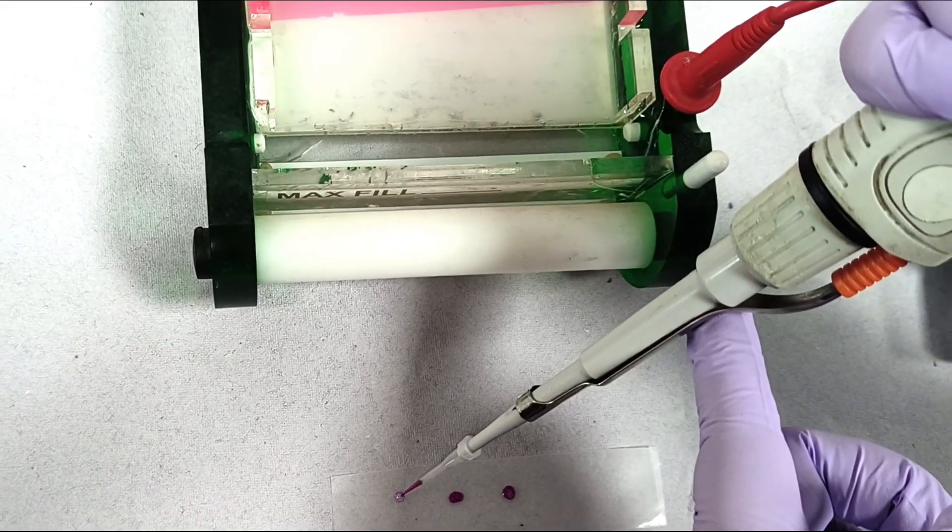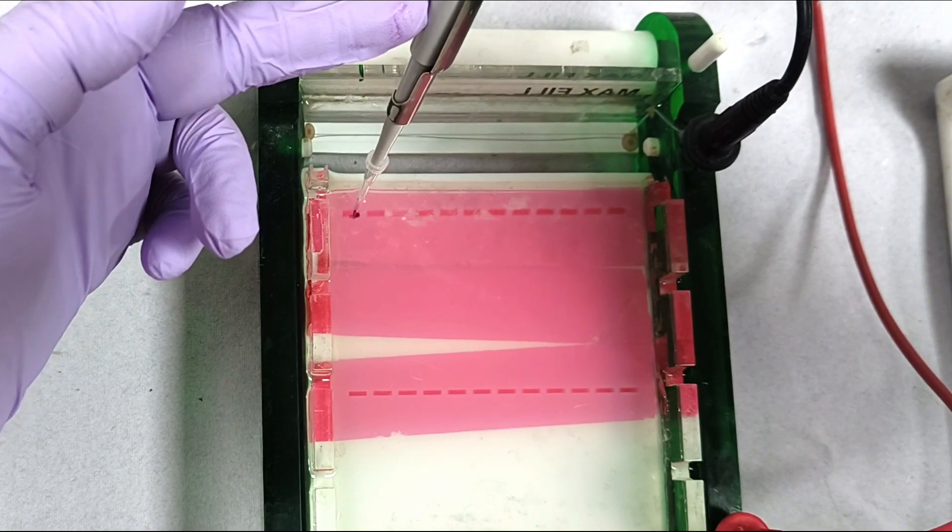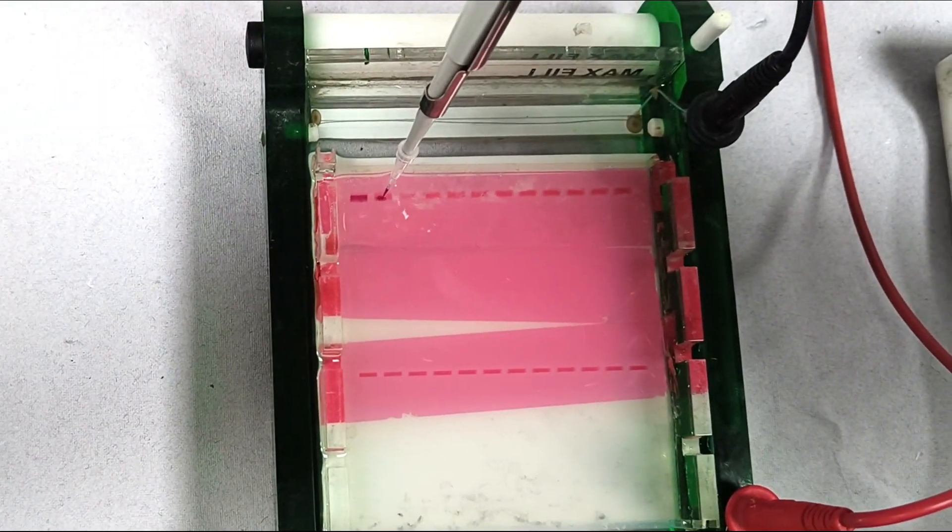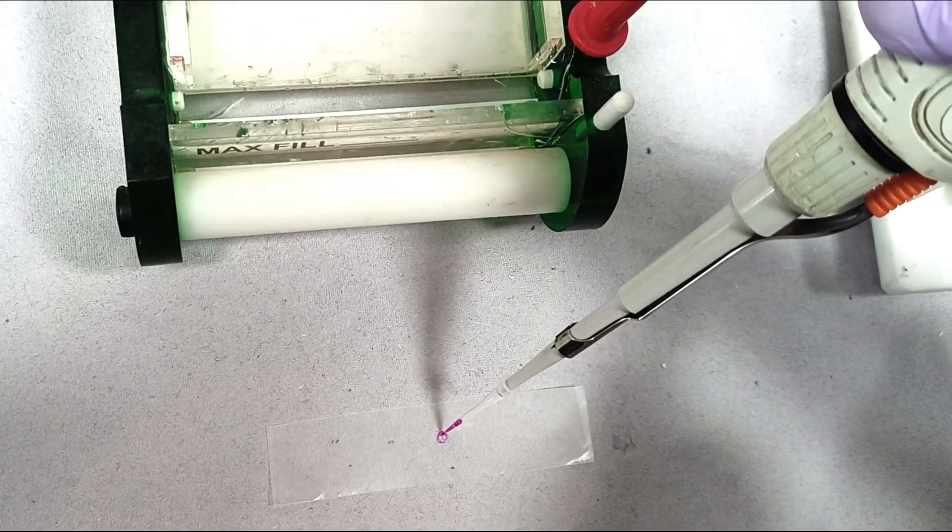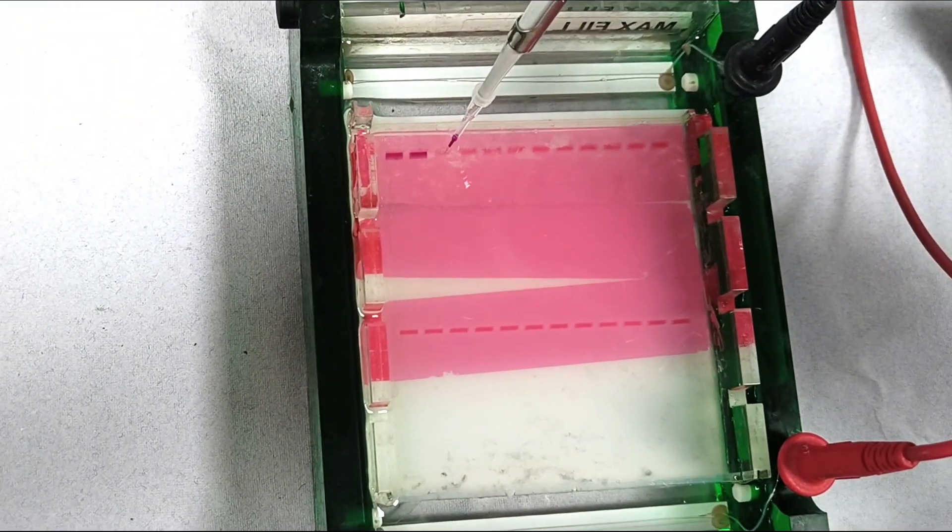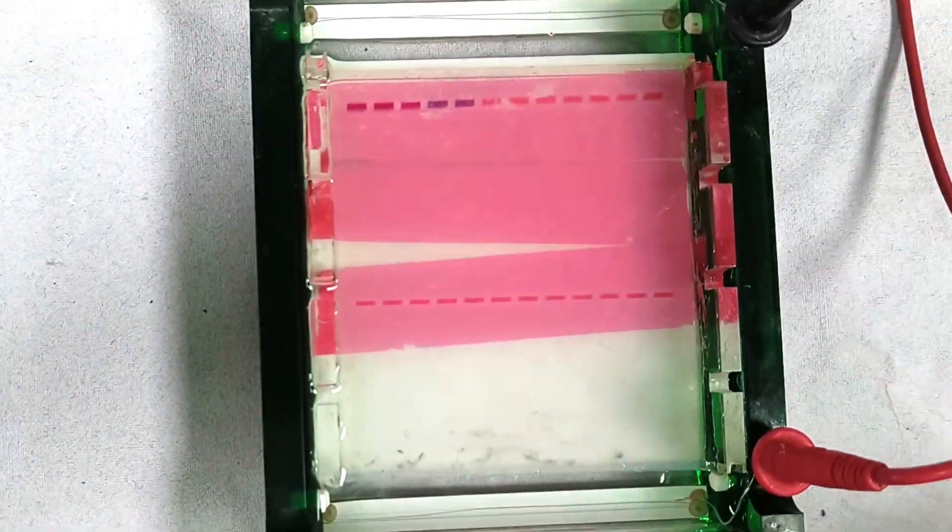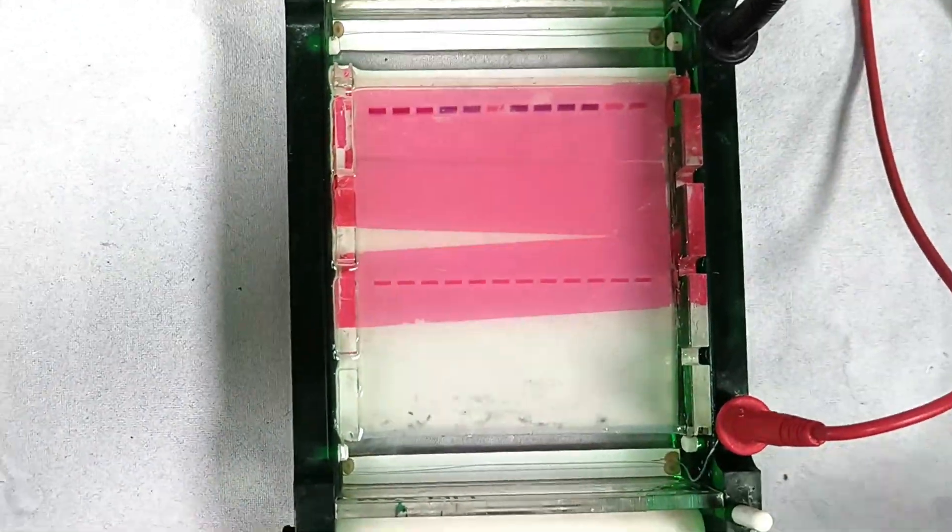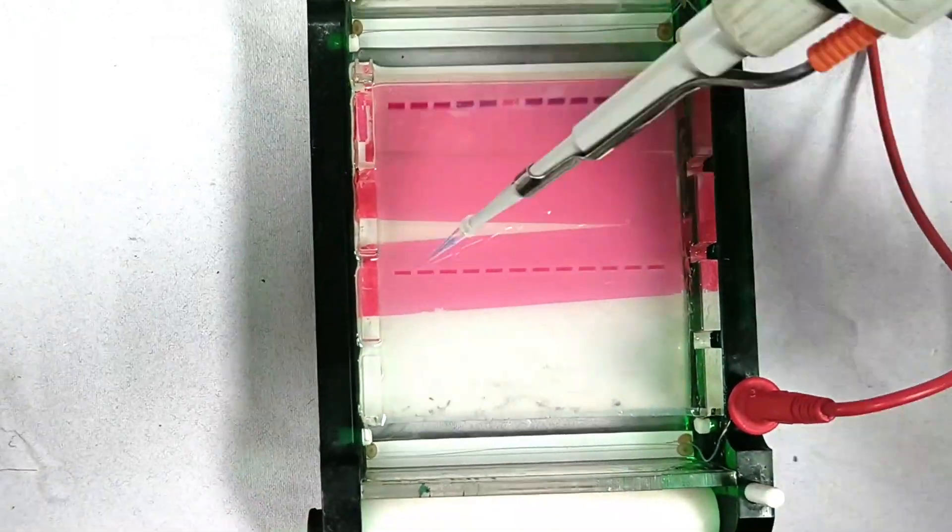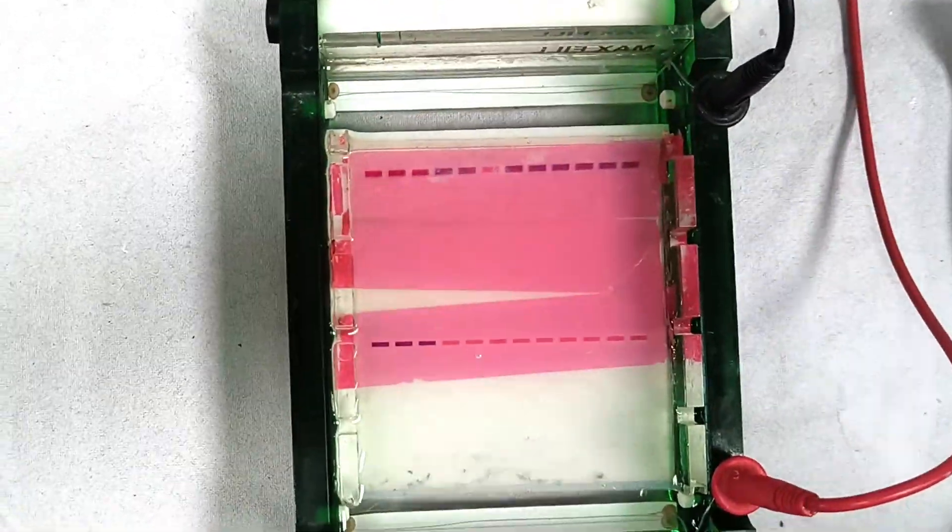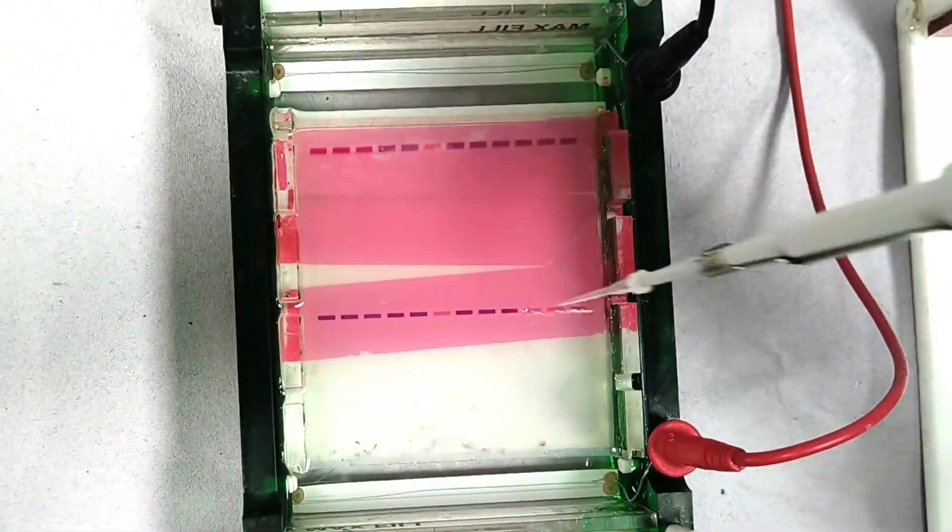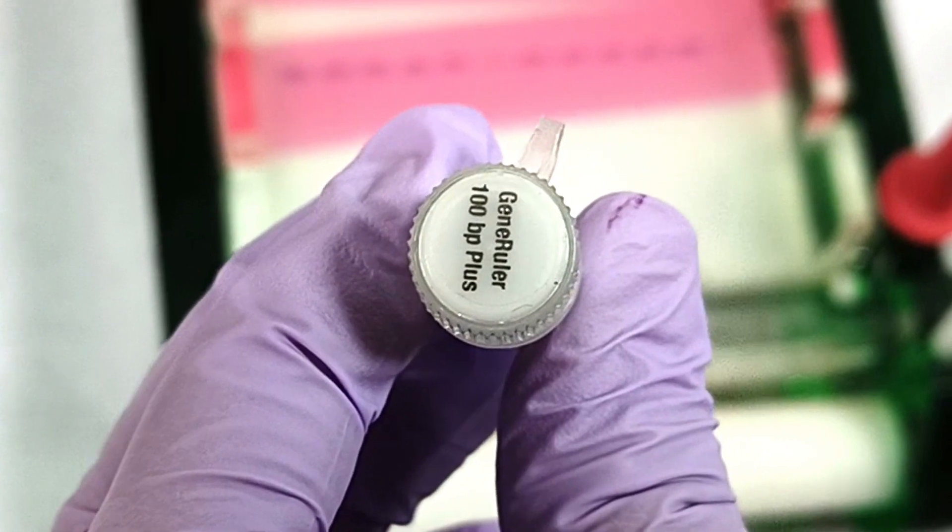Carefully load the samples into the wells using a pipette. After loading all the samples, finally load the DNA ladder. Here we are using a 100 base pair ladder.